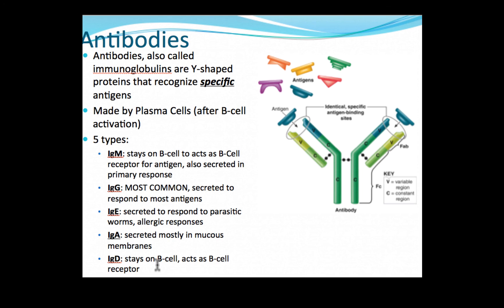IgA is found in the mucus membranes. All of these are made by plasma cells after B cells are activated when they find their specific antigens within the body. I hope this helps. Let me know if you have any questions.